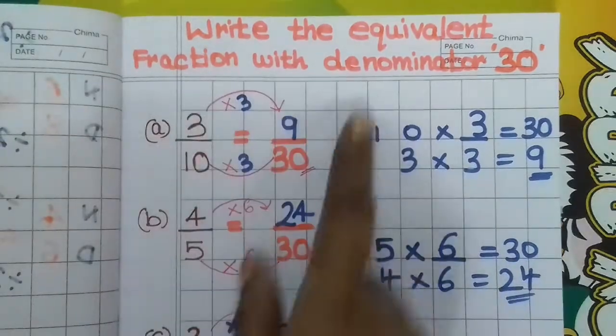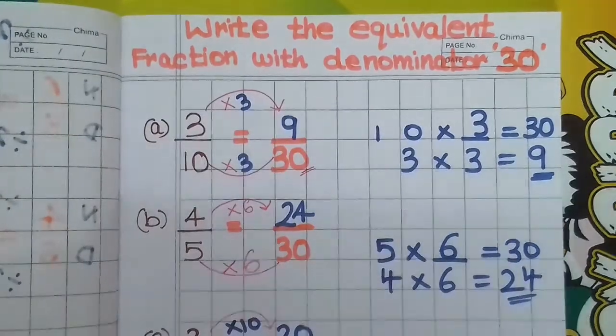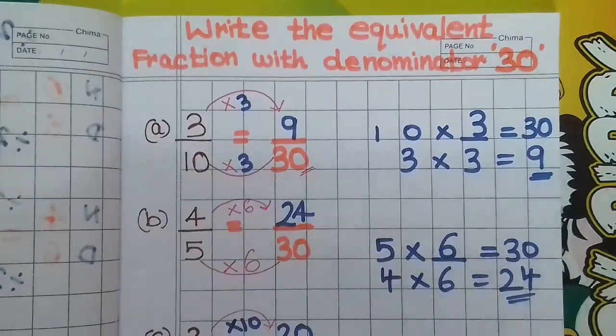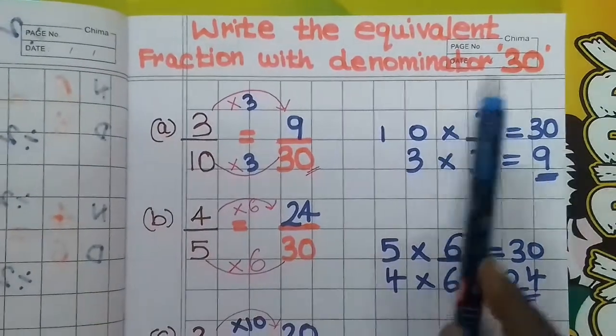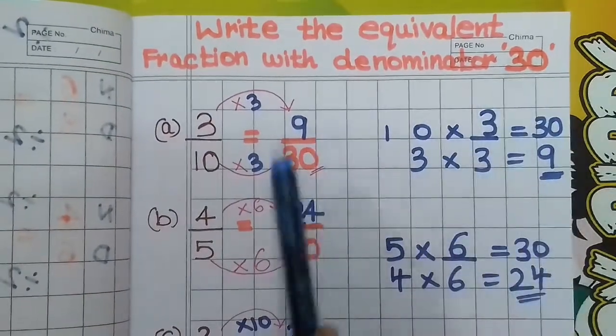So the next question: write the equivalent fractions with denominator 30. Find the numerator value by applying either multiplication or division.